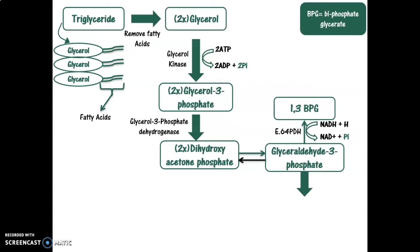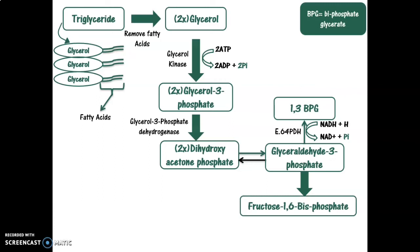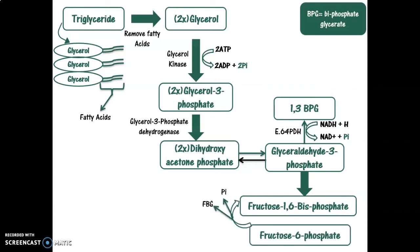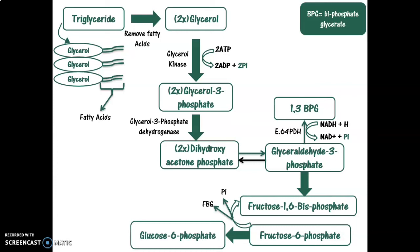The other pathway for glyceraldehyde-3-phosphate is its conversion into fructose-1,6-bisphosphate. This fructose-1,6-bisphosphate will then be converted into fructose-6-phosphate by the enzyme fructose-1,6-bisphosphatase, which removes the phosphate group from carbon number 1. This fructose-6-phosphate molecule is then converted into glucose-6-phosphate and finally into glucose. You can watch my previous videos about gluconeogenesis where I mention all the enzymes responsible for these conversions. And finally, we have formed the glucose molecule from glycerol, a non-carbohydrate source.